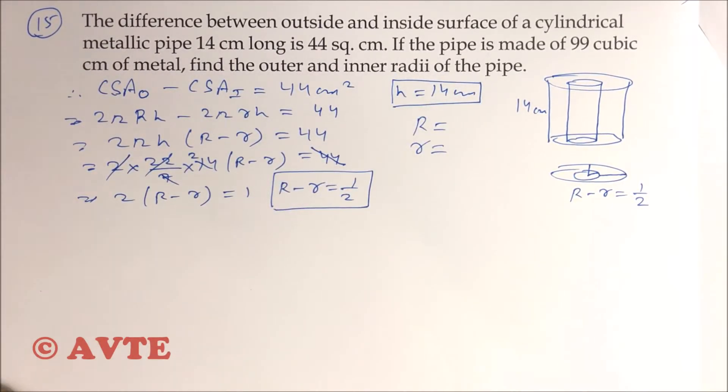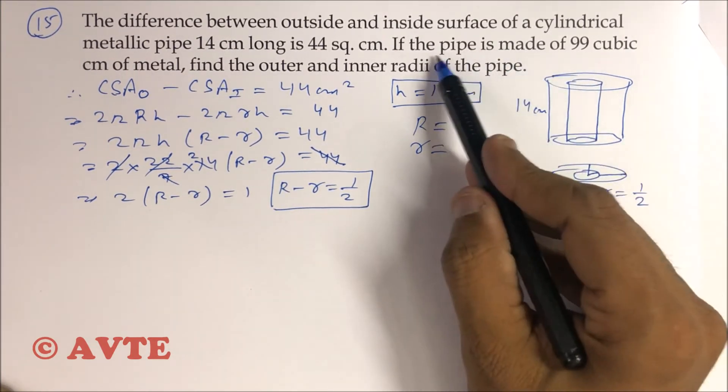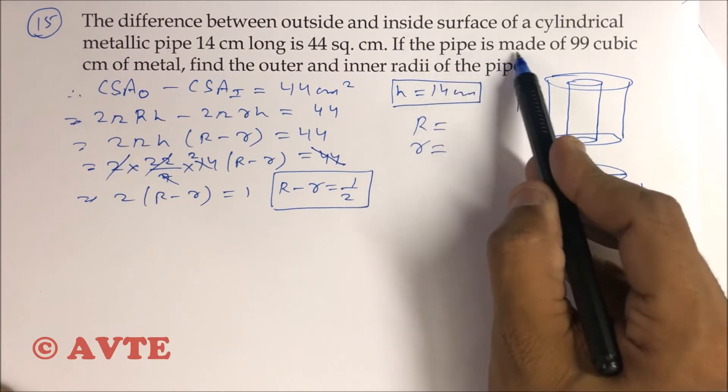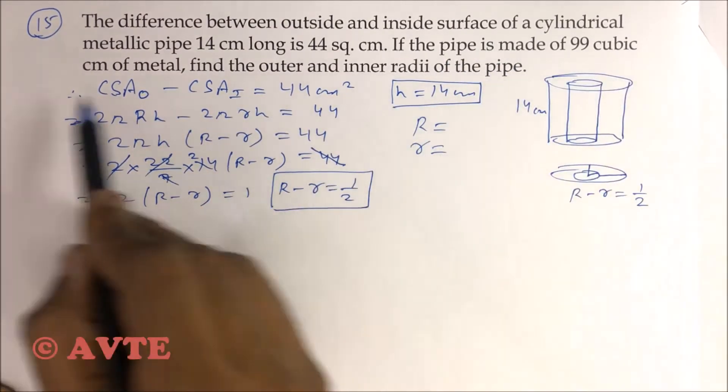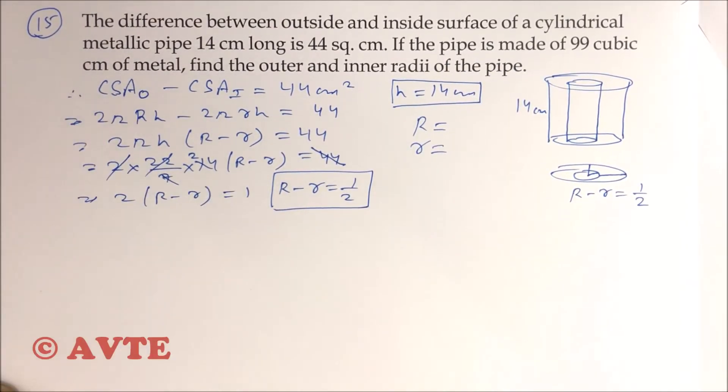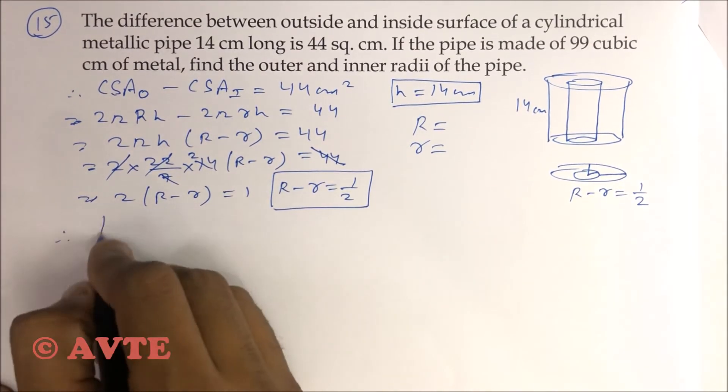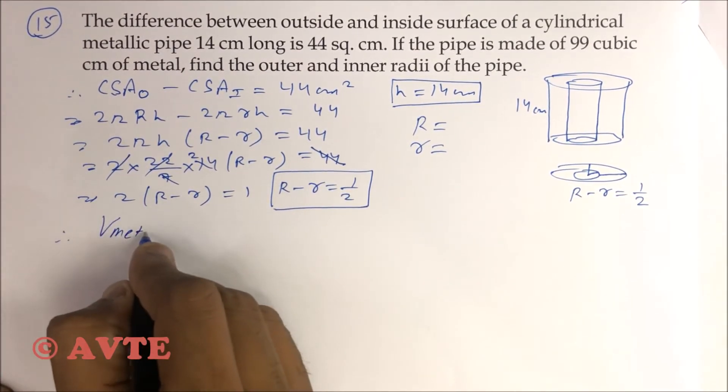The second condition is the pipe is made up of 99 cubic cm of metal. It means the volume of metal is given, this metallic pipe is made up of 99 cubic cm of metal.